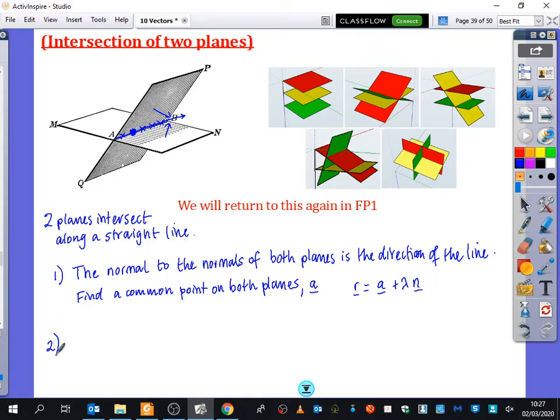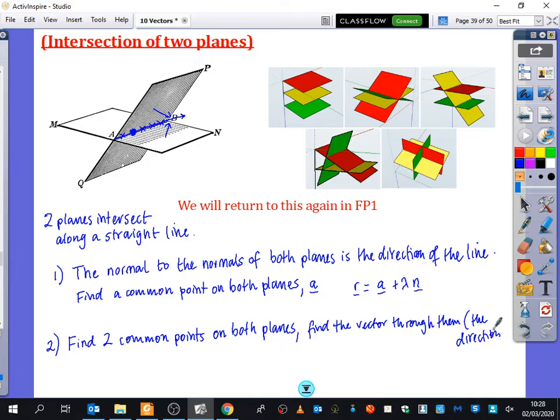The other technique to do this is to just find two common points. You understand what I mean by common points? On both planes at the same time. Find two common points on both planes. What do you think you can do after you've found two common points on both planes? Yeah, you can subtract them to find the direction. Find two common points on both planes, find the vector through them, and that's the direction. And then you just form the line equation.